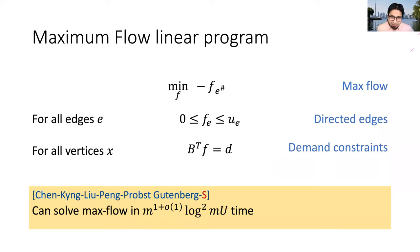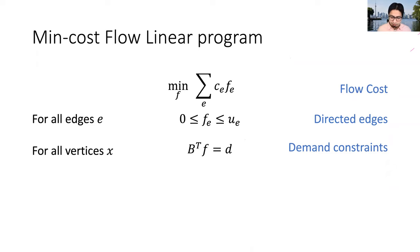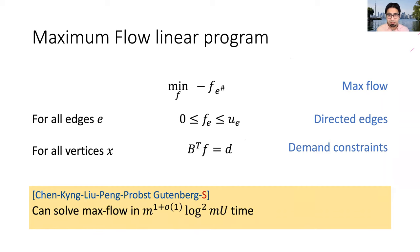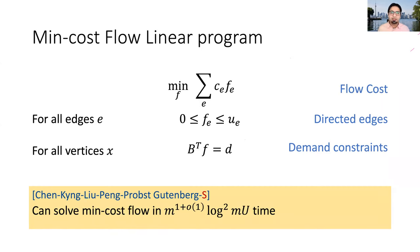Our result is not just for maximum flow. We can generalize the max flow linear program easily to a slightly different objective where the objective is now a linear function of the flows — keeping all constraints the same, just going from maximizing flow on a single edge to minimizing any linear cost. This is the famous min-cost flow problem, and our methods directly apply: we can solve min-cost flow again in almost linear time.